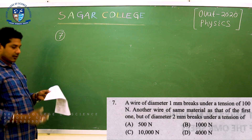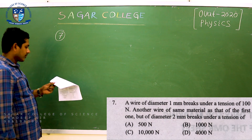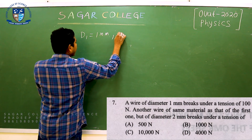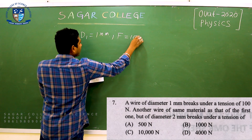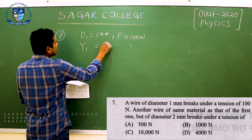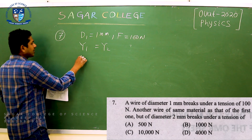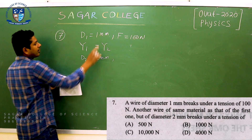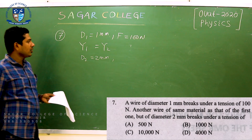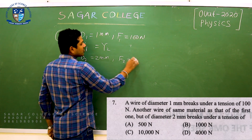Question number 7: A wire of diameter 1 millimeter breaks under a tension of 100 newton. Another wire of the same material — meaning the same modulus of elasticity — but diameter equal to 2 millimeters. So for 1 millimeter diameter, the breaking force is 100 newton. What is the breaking force F2 for 2 millimeter diameter?